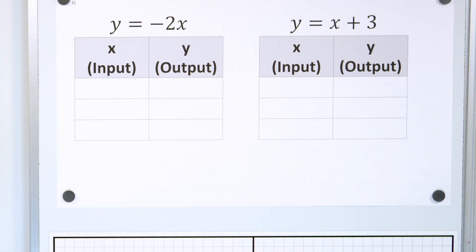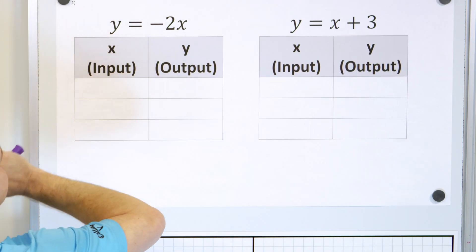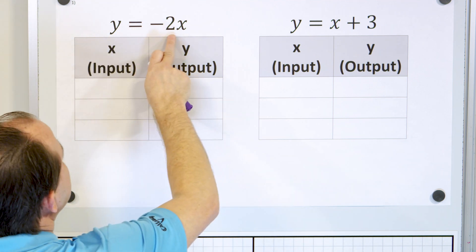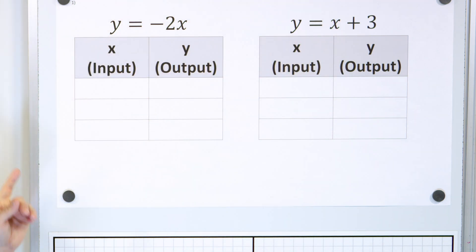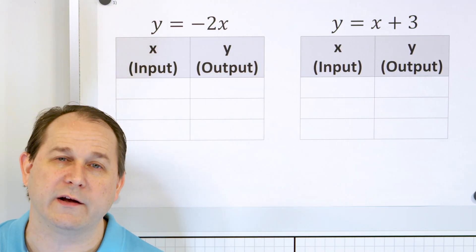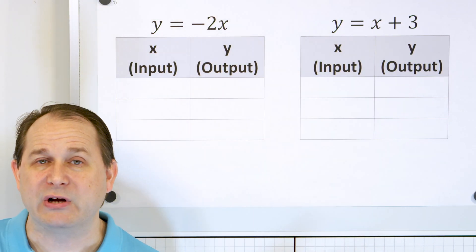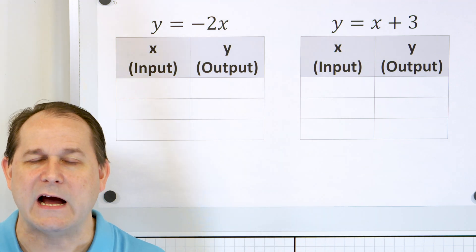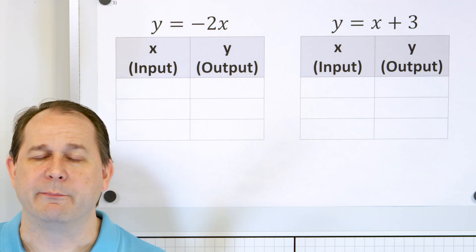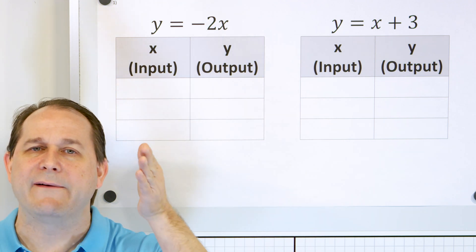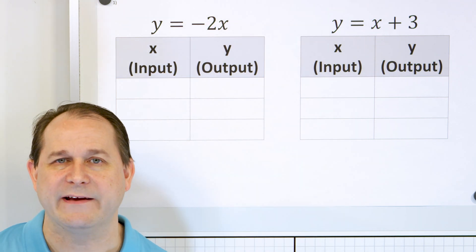For our first system, the two lines are y is equal to negative 2x and y is equal to x plus 3. You can graph these lines any way you want to. For the first problem, I'm going to graph it using an input-output table — we'll connect the dots and draw the line. For follow-on problems, we'll just graph it using the y-intercept and the slope, which is a lot faster.